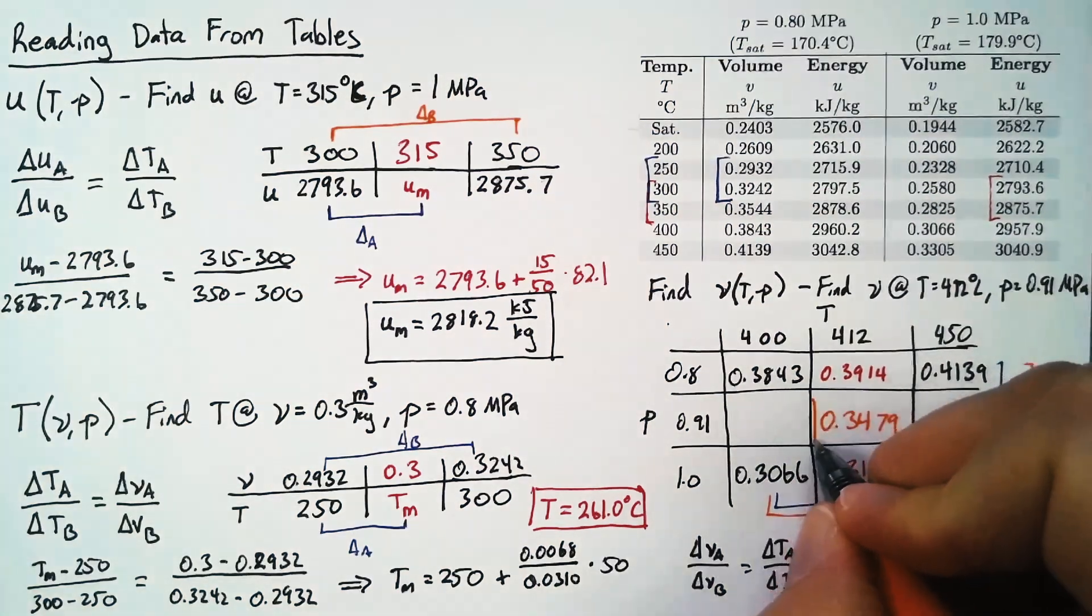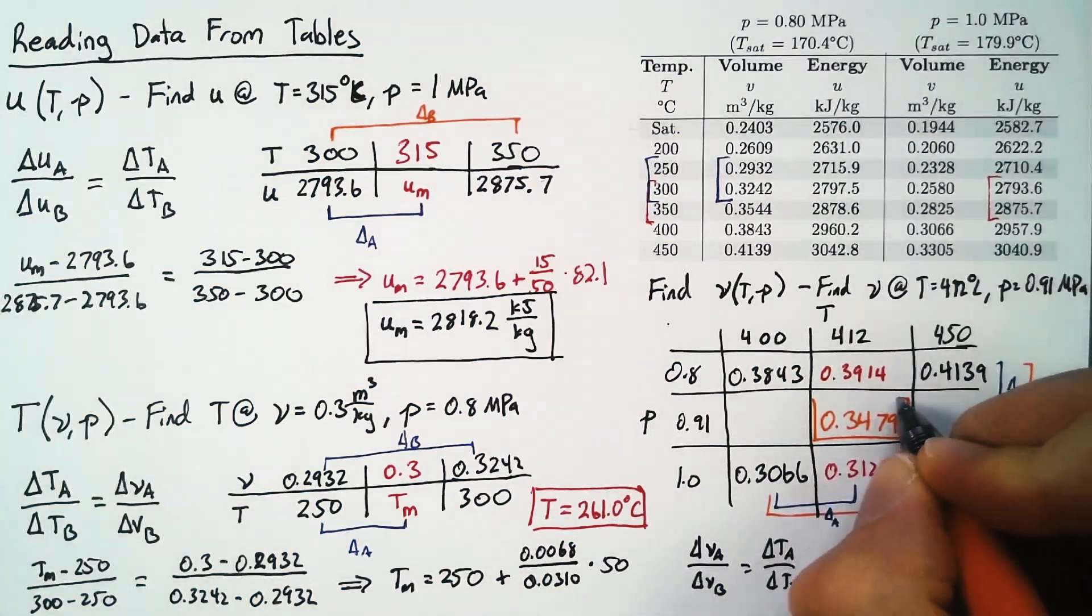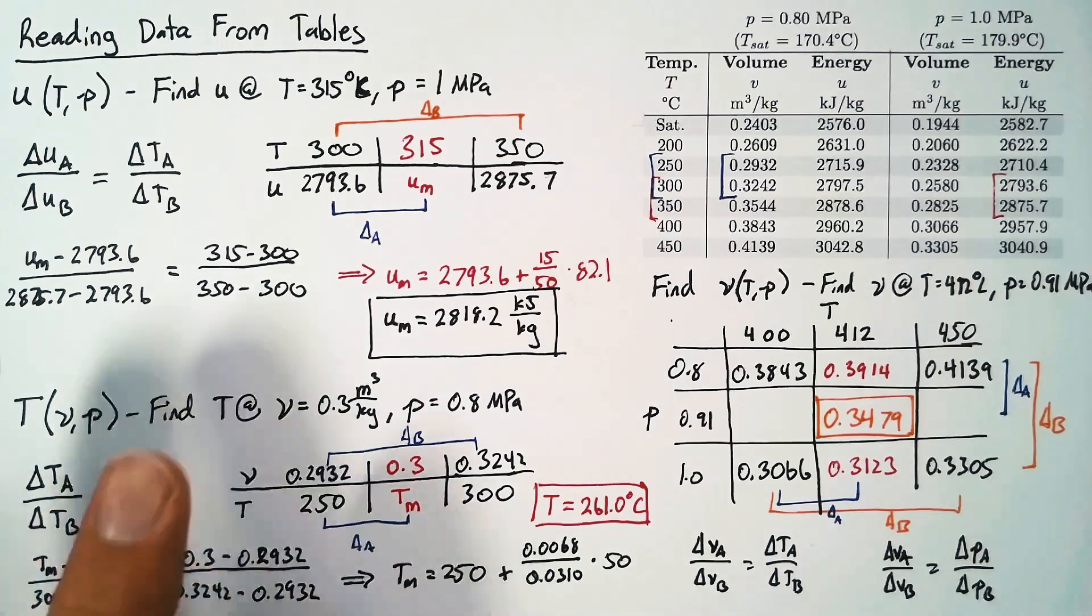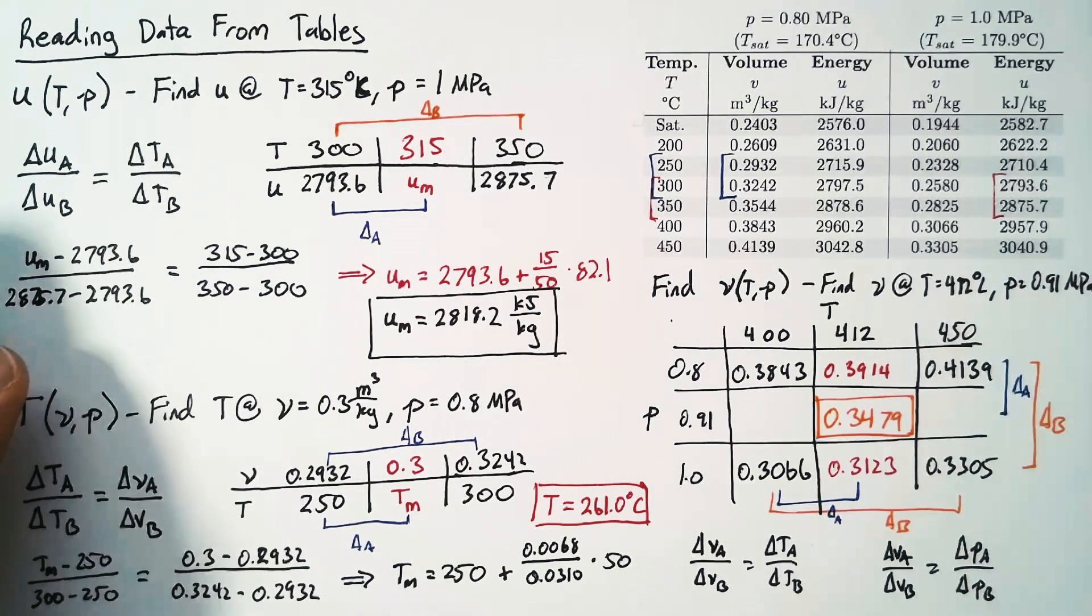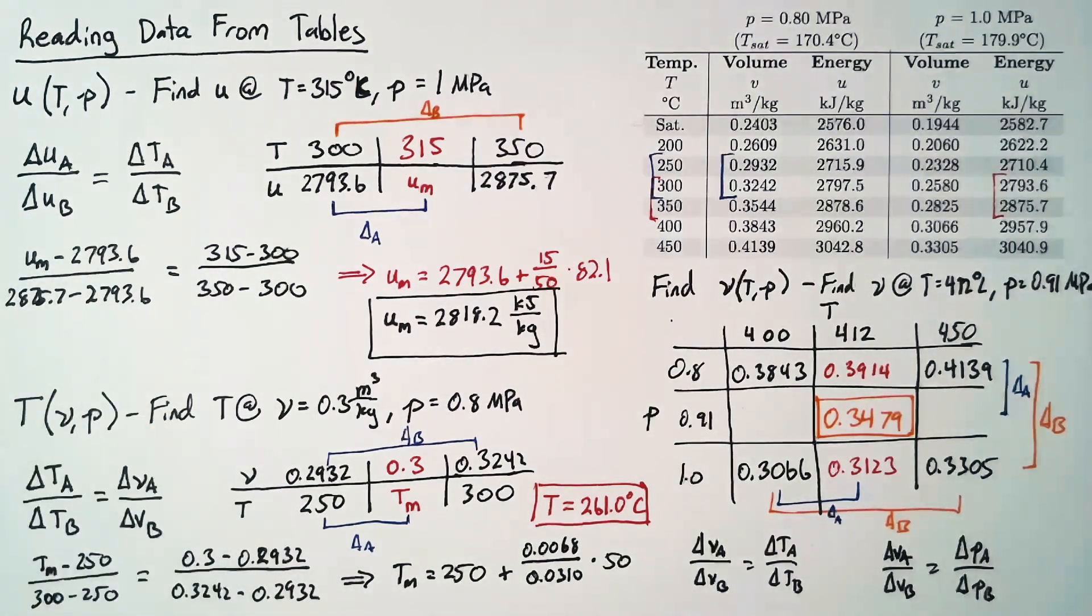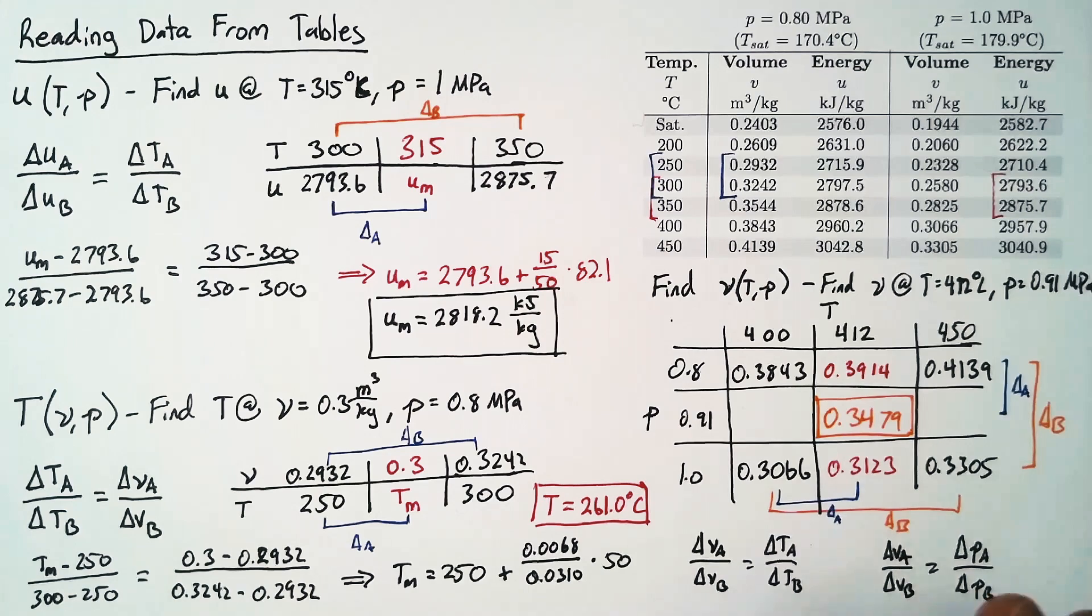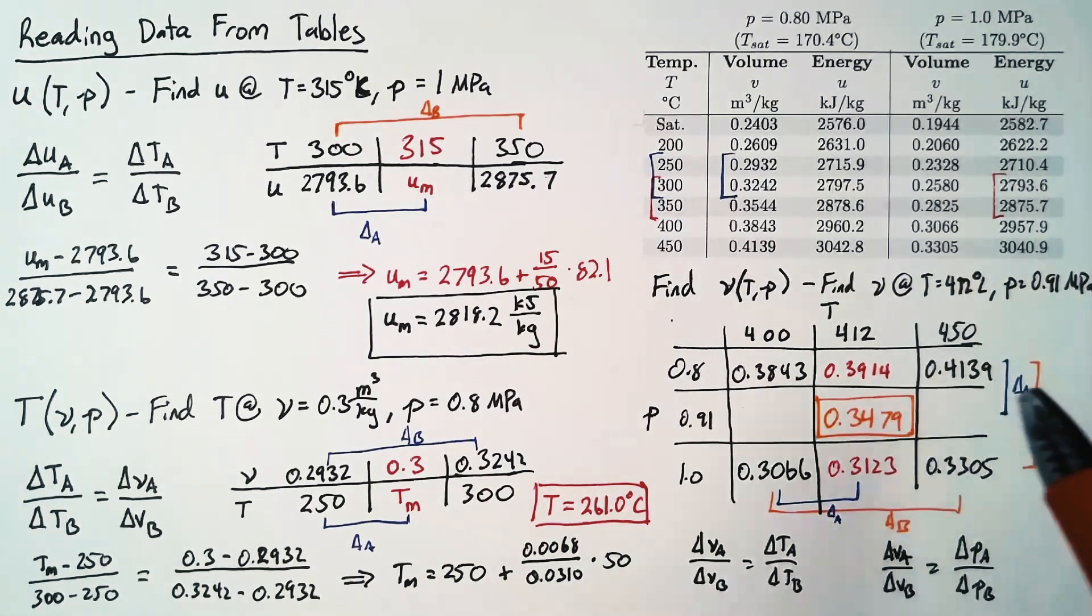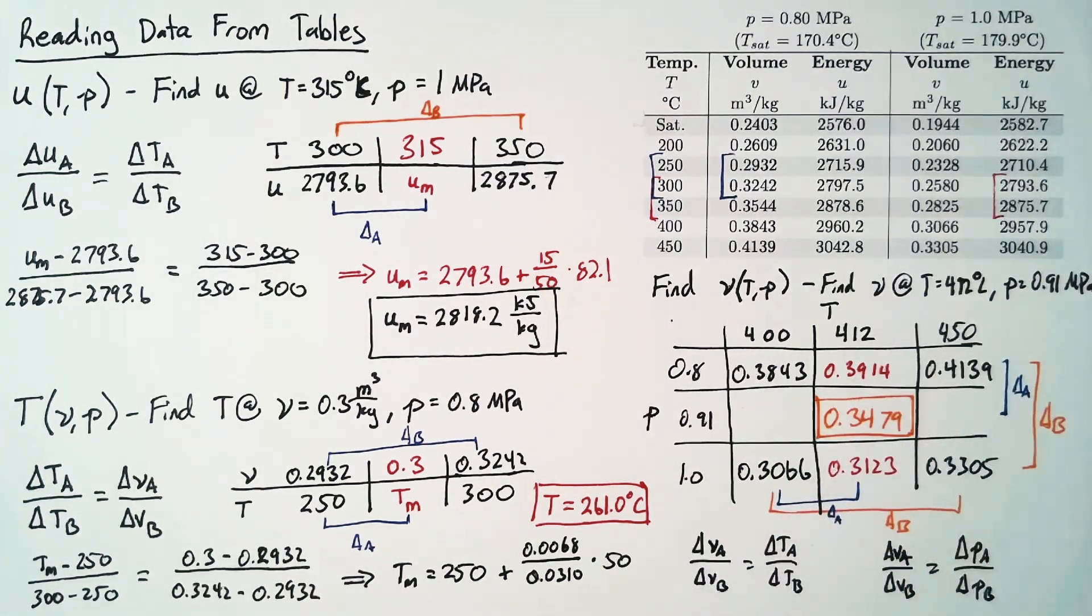So this is our final answer with the units. On the left side, we have two examples of linear interpolation—creating a line between two points and finding a point in the middle. On the right side, we call this bilinear interpolation because we're performing that linear interpolation procedure in two dimensions. I hope you find this helpful, and I'll catch you next time.